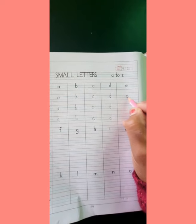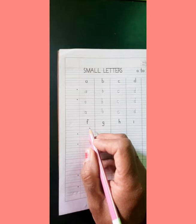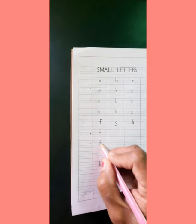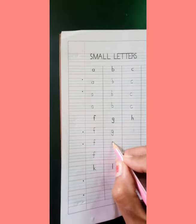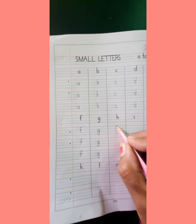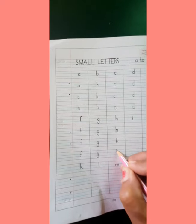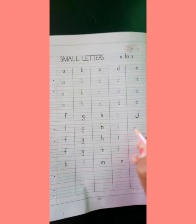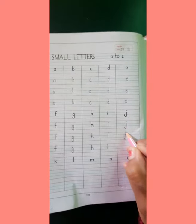Then we will write small e. E. After that, children, we will come down and write small f. F. Now after that, children, we will write small g. G. Now children, after that we are going to write small h. Small h. Now we are going to write small i. Small i. Then children, after that we are going to write small j. J.